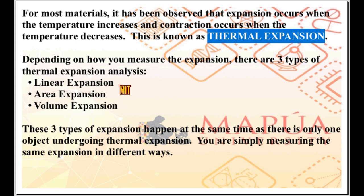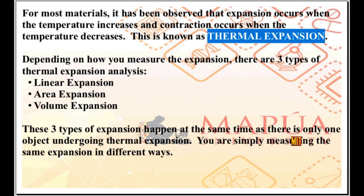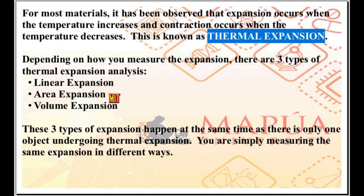It must be noted that these are just three ways of analyzing the expansion, depending on how the expansion was measured. As such, these three types of expansion analysis happen at the same time. As there is only one object undergoing thermal expansion, we are simply measuring the expansion in different ways — in terms of linear length, area (cross-section or surface area), or volume.